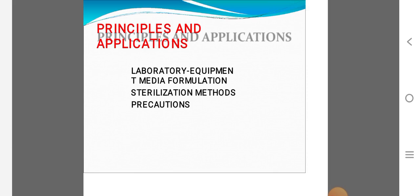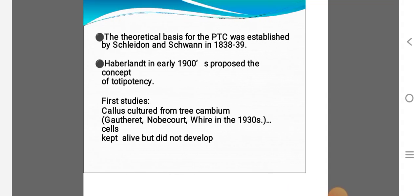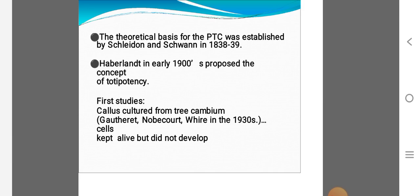Going to principle, you got a principle. We are using for the equipments, laboratory equipment, media formulation, sterilization methods, precautions. First one is the historical theoretical background. The historical basis of plant tissue culture originated from cell theory produced or established by Schleiden and Schwann.